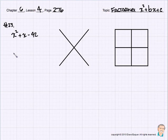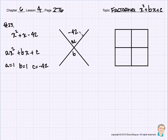Let's try number 23: X² + X - 42. Again, AX² + BX + C. A = 1, B = 1, and C = -42. We need AC on top, which is -42, and B below, which is 1. We're looking for two numbers whose product is -42 and sum is 1: +7 and -6. Our factors are 7X and -6X.